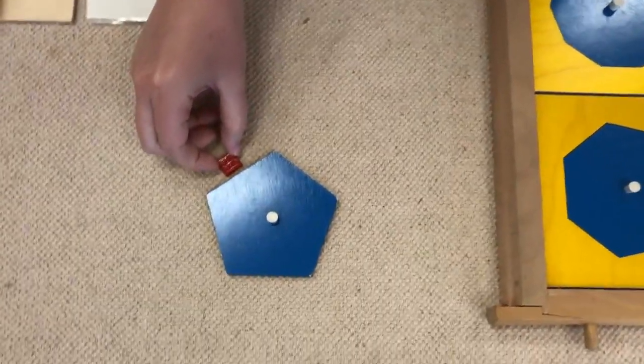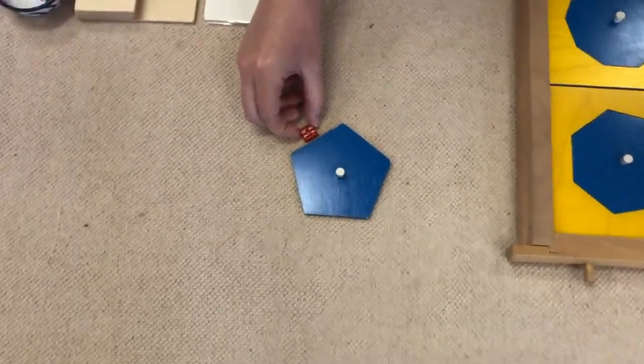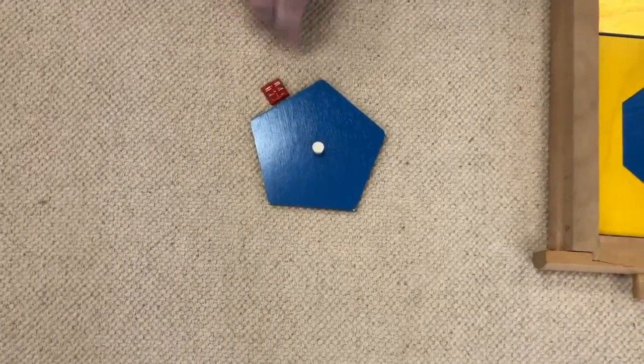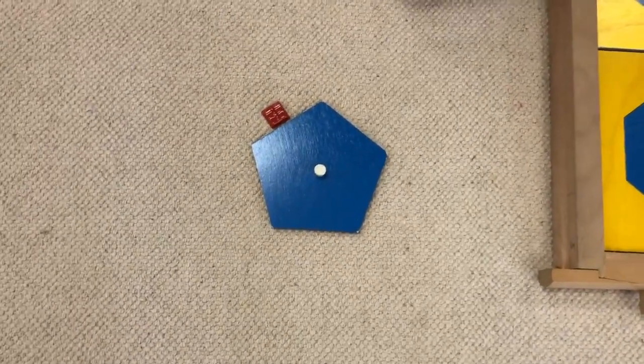When I count the sides of a polygon, I like to use a memory marker on one side. This will be the first side that I count. That way I don't lose track of which sides I've counted.